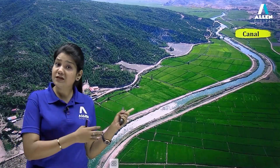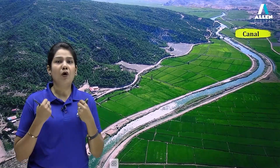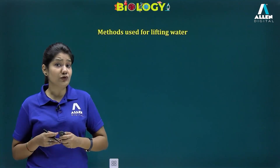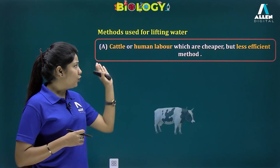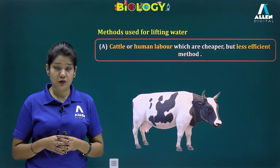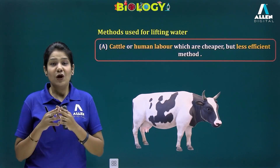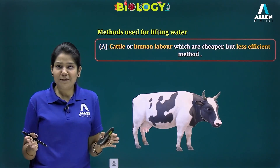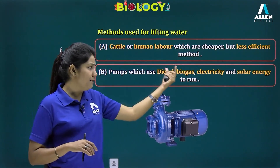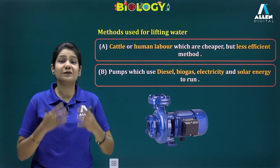The question arises: how are we going to lift the water out from these sources? We can use cattle or human labor, which are cheaper but less efficient and take much more time. The modern method uses pumps run by diesel, biogas, electricity, or solar energy to pump out the water from these water sources.